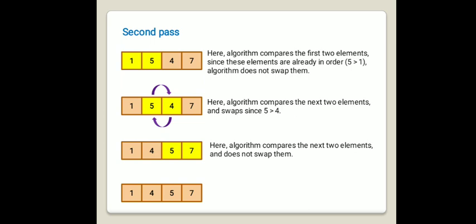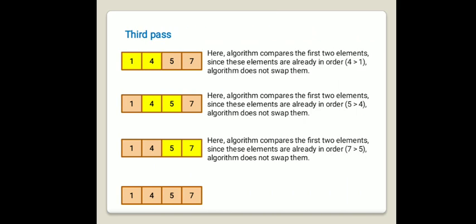The array is now completely sorted, but the algorithm does not know this until it completes one whole pass without any swap. In the third pass, starting with 1, 4, 5, and 7, the algorithm compares the first pair and does not swap, then 4 and 5 — does not swap, then 5 and 7 — does not swap. Since no swaps occurred, the algorithm confirms the sorted sequence: 1, 4, 5, and 7.